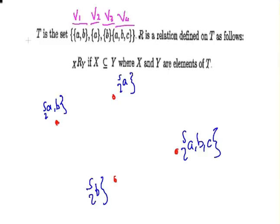Now R is a relation defined on T as follows: xRy if X ⊆ Y. Just to be clear, that means subset. Consider the example A. A is a subset of AB, so it will have an edge going from A to AB. Also, A is a subset of ABC, so it has an edge going there.